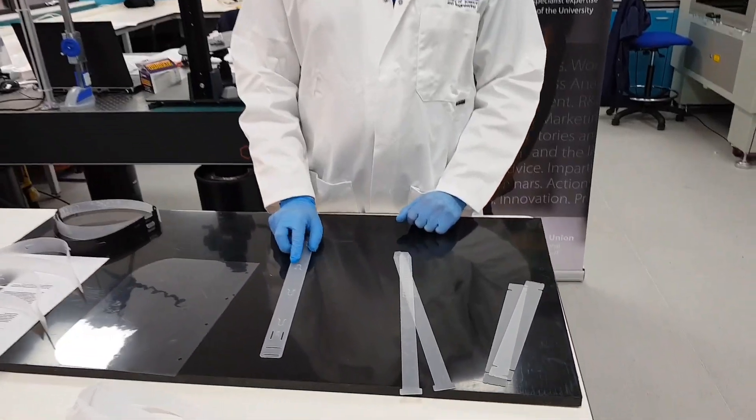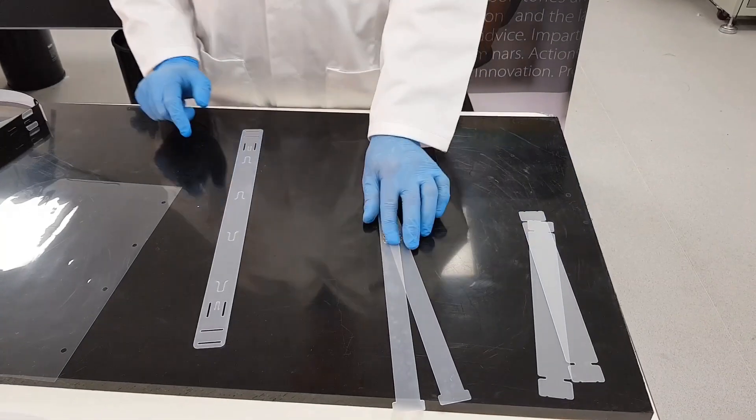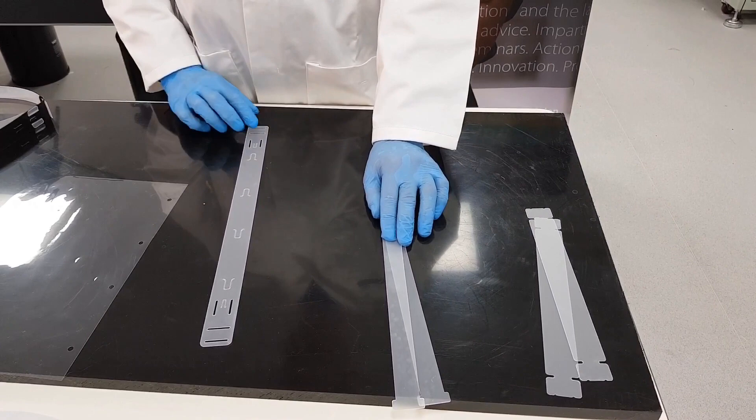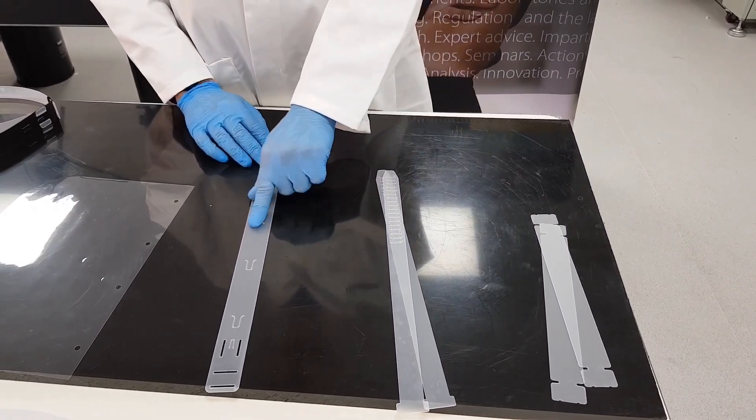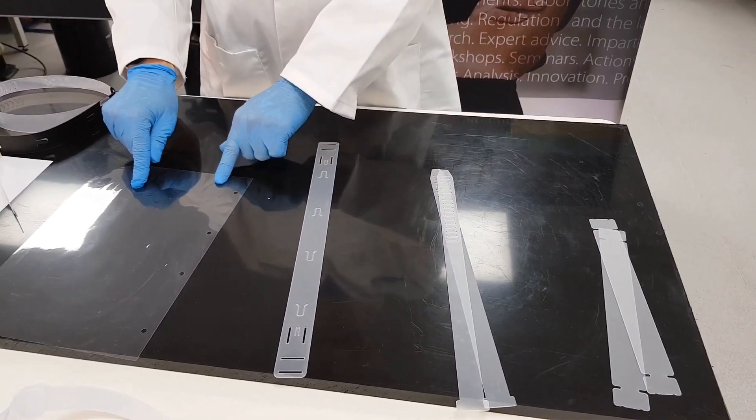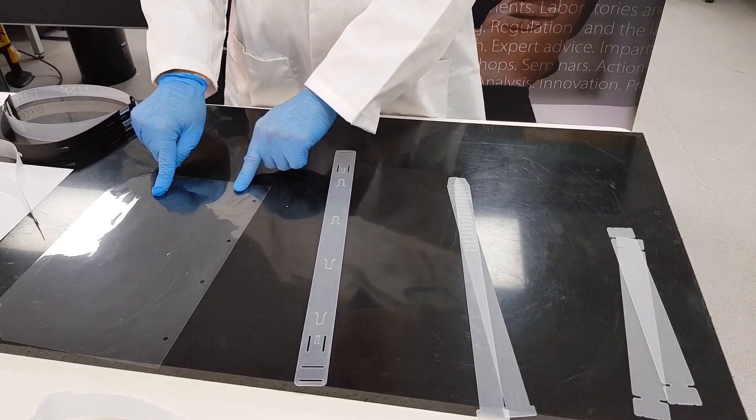There are three parts: the headband, the adjustable strap, and the fixing band. There is then a piece of acetate which we'll fix later.